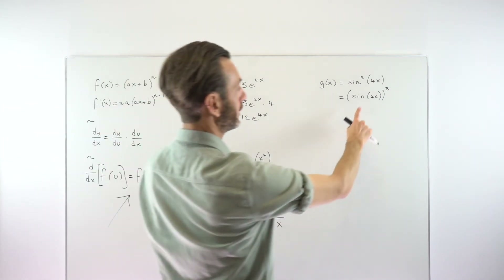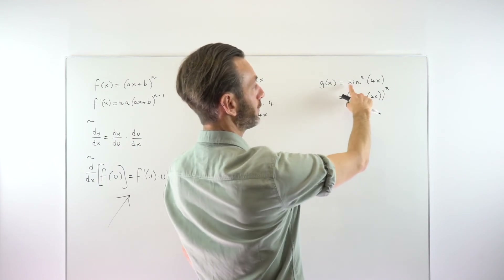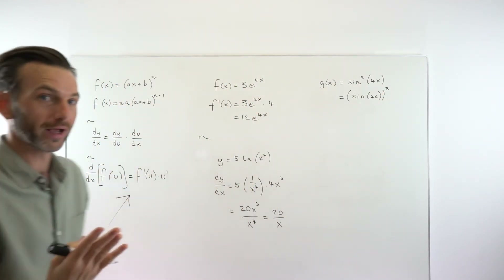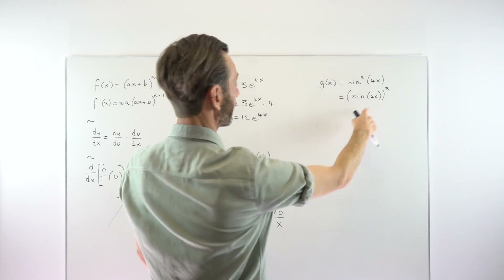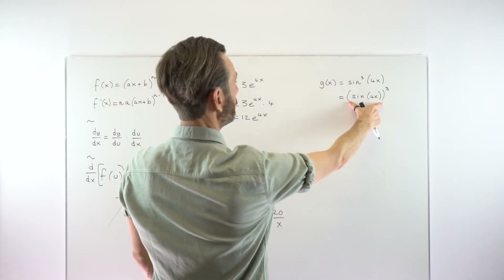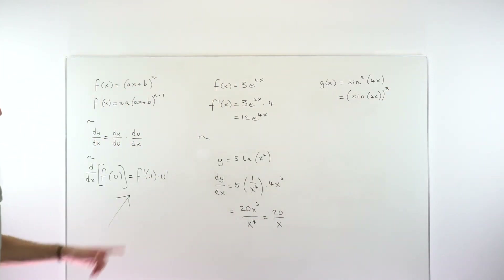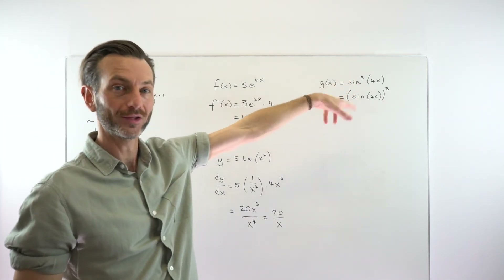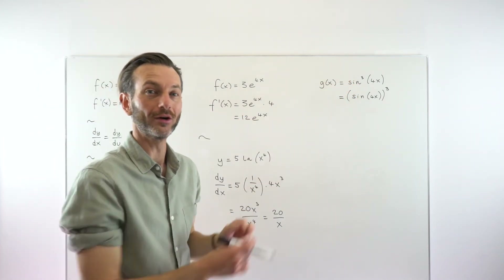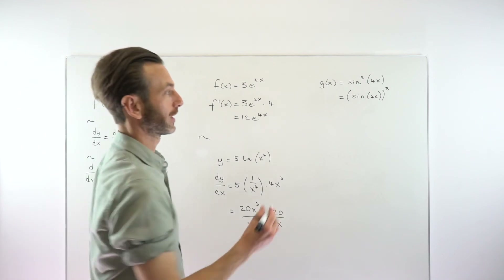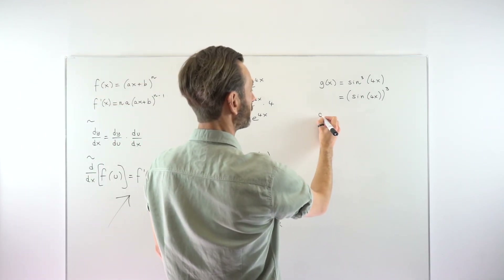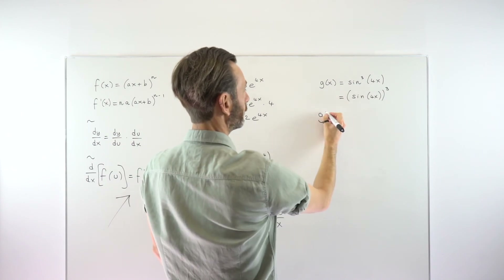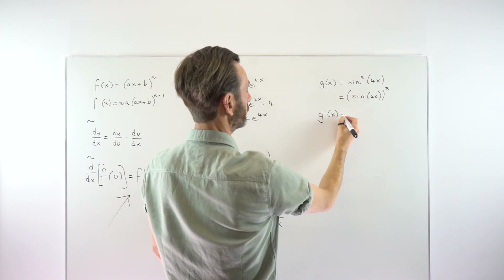The internal function here is sine(4x) — not just 4x — and the cubic function is the external function. This is a more complex version that tends to catch a lot of people out, and it's an example that could potentially come up for you. Going back to our rule: differentiate the external function first. This form makes it more intuitive as to what to do next.